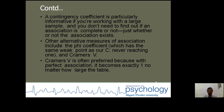The contingency coefficient is particularly informative if you are working with a large sample and you do not need to find out if an association is complete — just whether or not the association exists. Alternative measures of association include the phi coefficient, which has the same weak point as the contingency coefficient in never reaching one for perfect correlation. Cramer's V is often preferred because with perfect association it becomes exactly one, no matter how large the table.